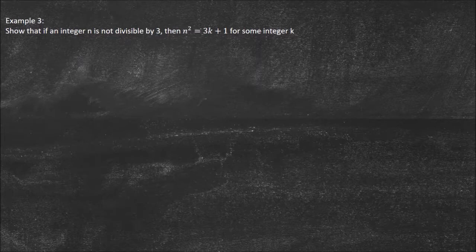Show that if an integer n is not divisible by 3, then n squared equals 3k plus 1 for some integer k.